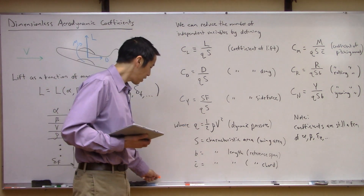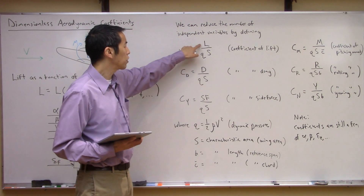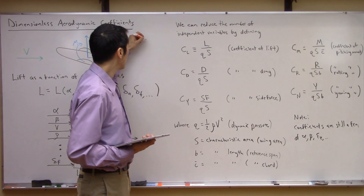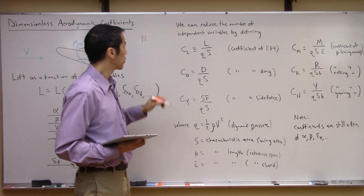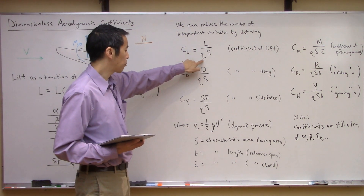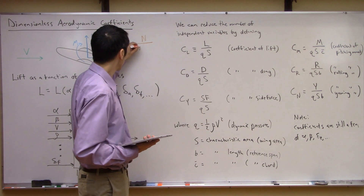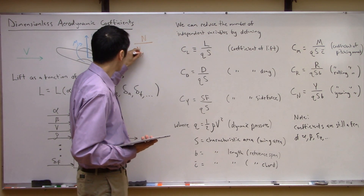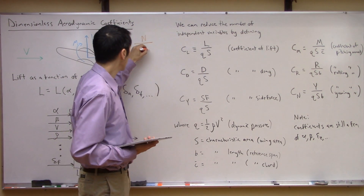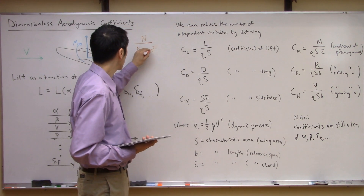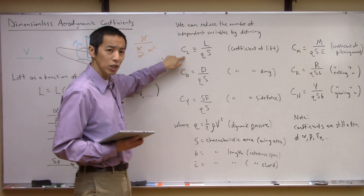What that means is that if you have an experiment with a given density, velocity, and wing area that gives you some amount of lift and therefore some coefficient of lift, if you scale up the size of the problem — change the wing area, make the plane bigger — you should get the same coefficient of lift. So some of these independent parameters are not completely independent; we can normalize them out. And why are these called dimensionless? If you look at the units of lift — newtons — divided by dynamic pressure, which is force per area (newtons per meter squared), times wing area in meters squared, all the units cancel out. So CL is dimensionless.